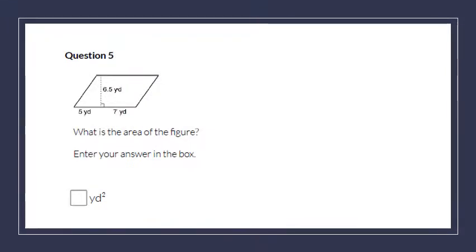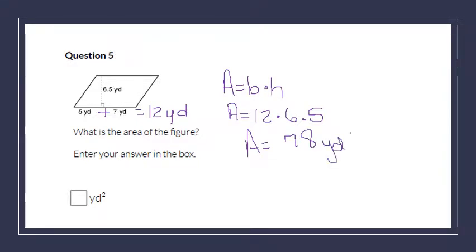Number 5. What is the area of this figure? So they're trying to be tricky tricky with us and not mention the whole length of that base. So you've got to be smart and make sure to add those two together to get the entire length of your base. And it is 12. So then I'm going to multiply 12 times my height, 6 and a half. So when I multiply 12 by 6 and a half, I do get that my area of this parallelogram is 78 yards squared.